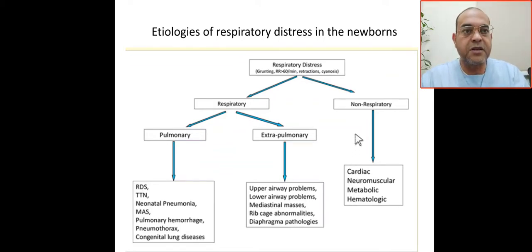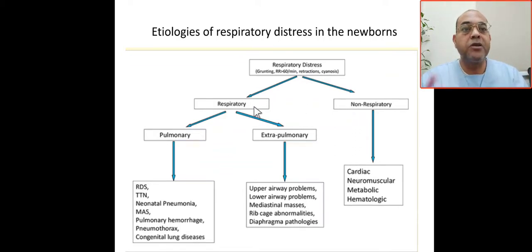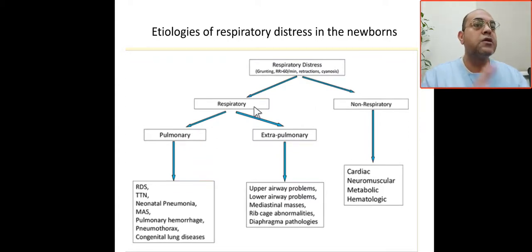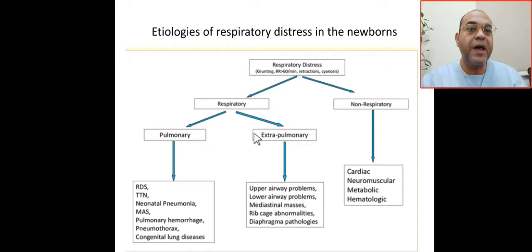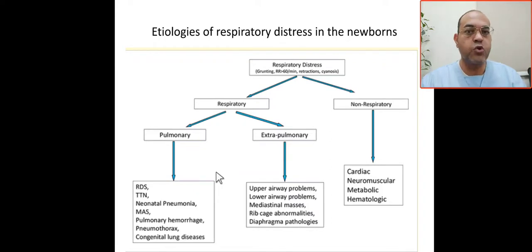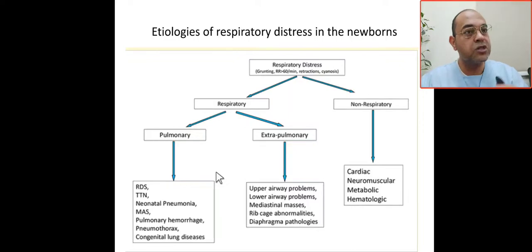We'll go in a systematic approach. This baby might be having a respiratory problem or a non-respiratory problem. If respiratory, it will be pulmonary or extra-pulmonary. Pulmonary — the most common, especially in premature babies — it will be RDS, respiratory distress syndrome, or associated with complications.